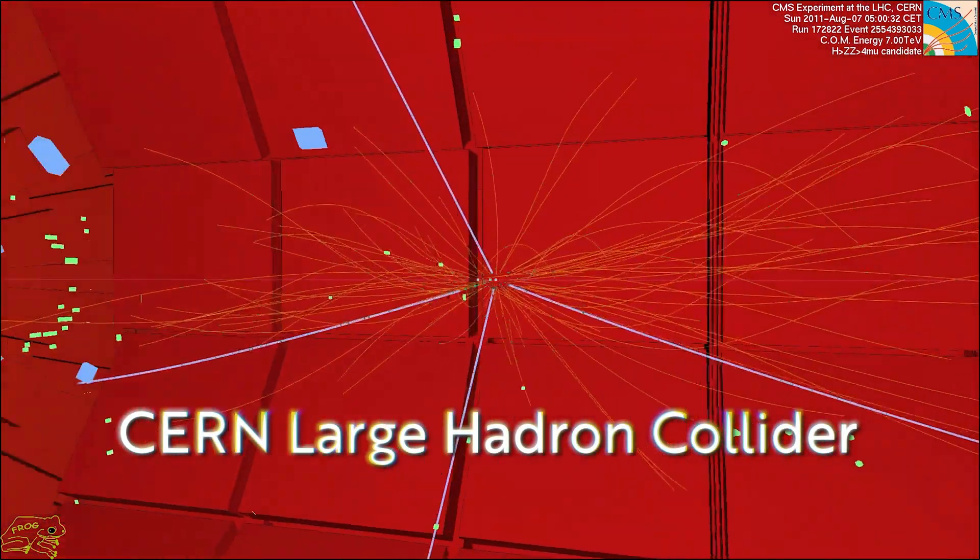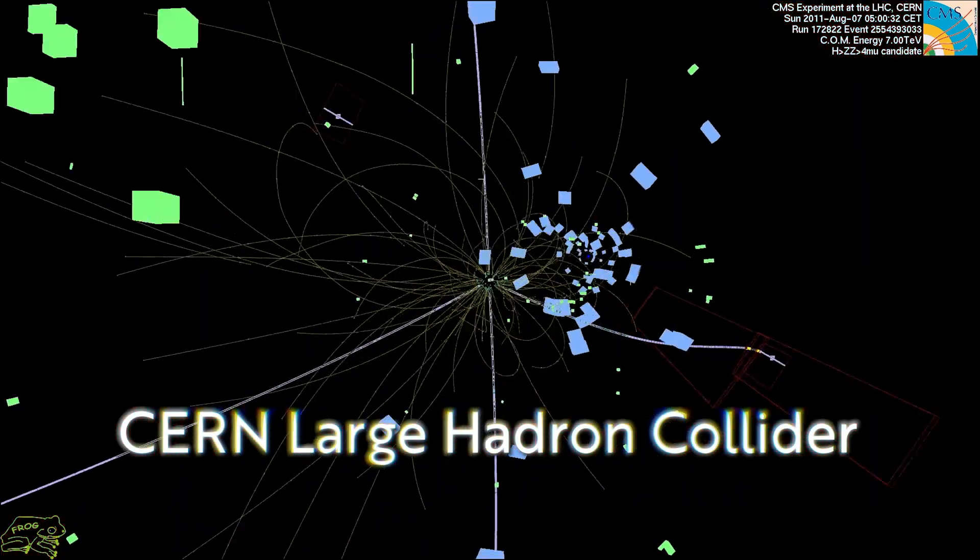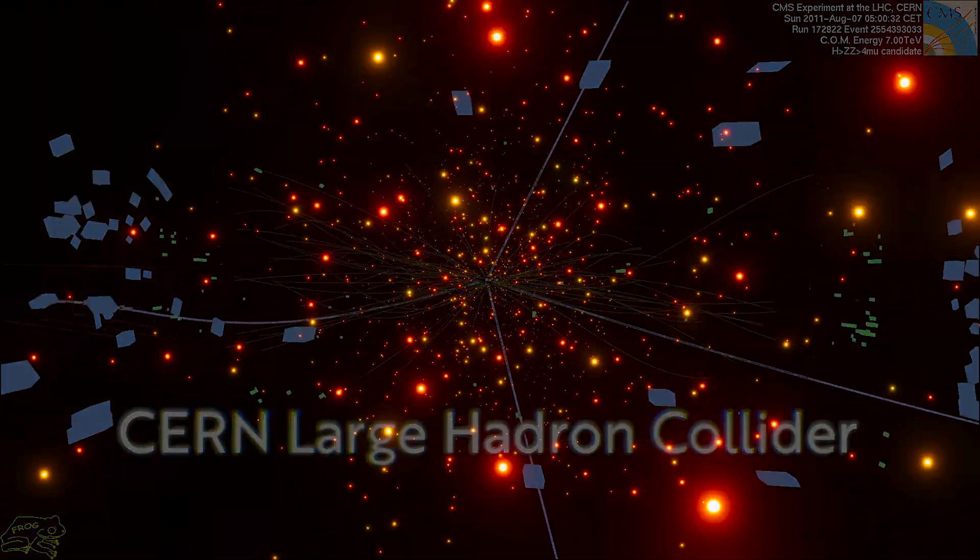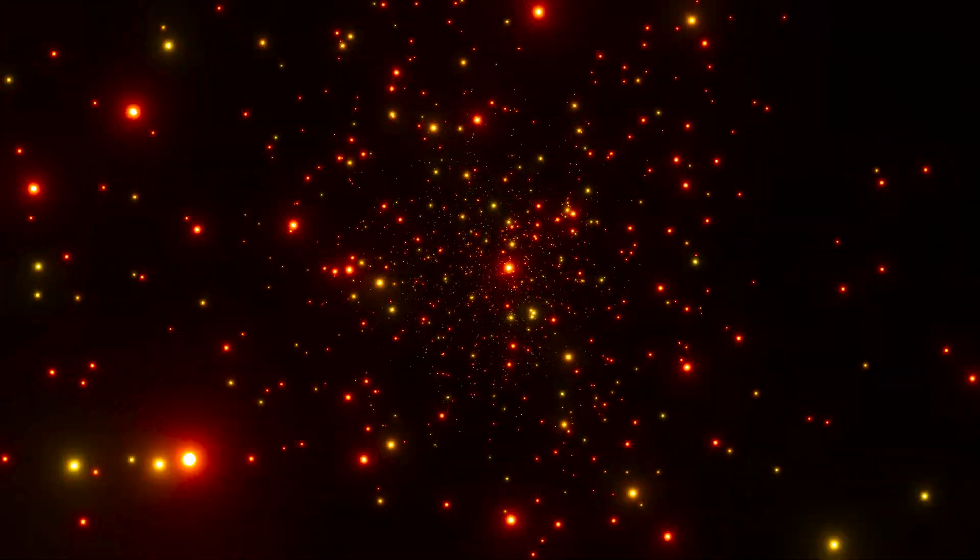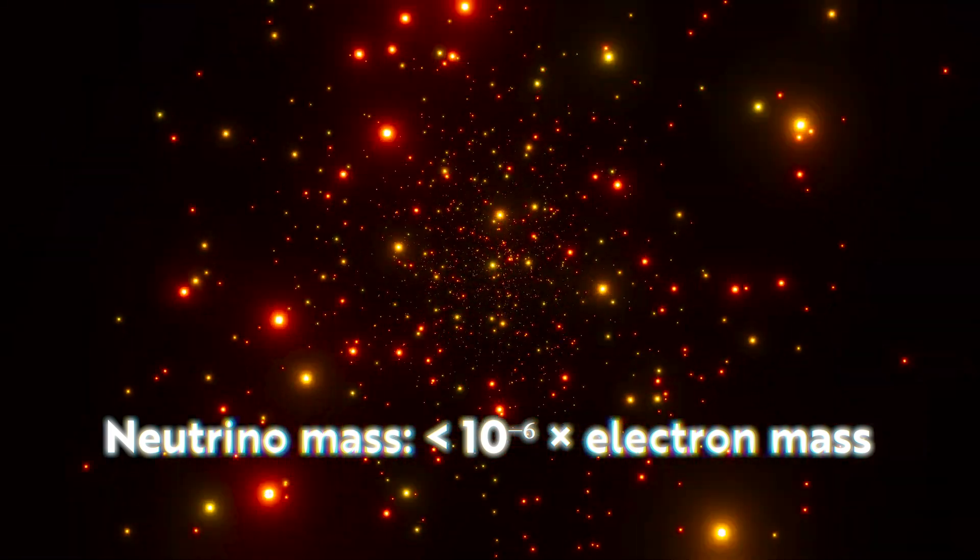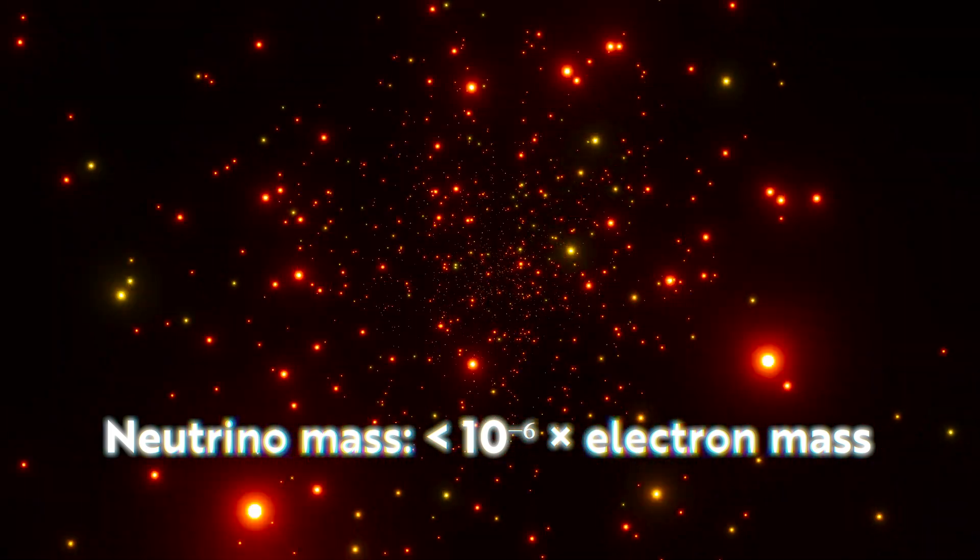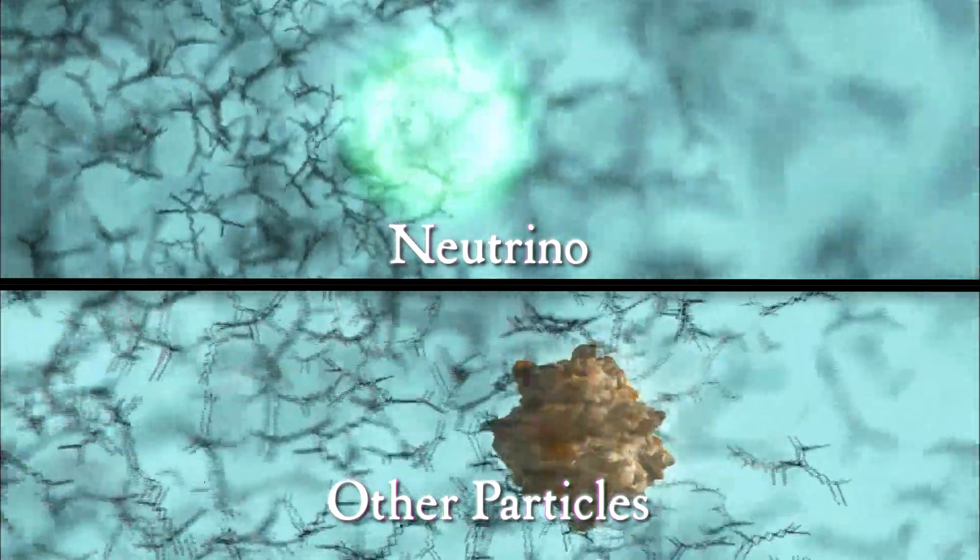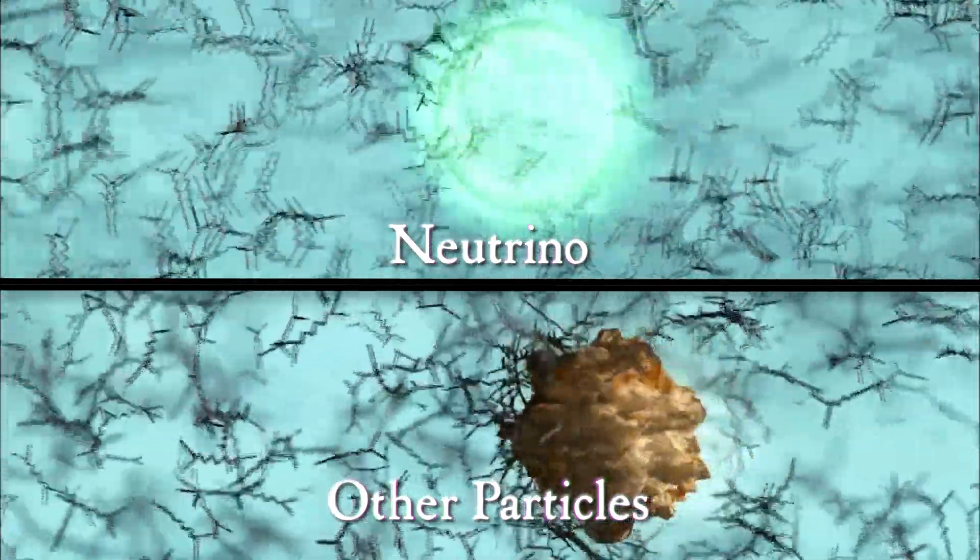But neutrinos are still just as mysterious as they were decades ago. As it comes to their interaction, the mass that they acquire is so tiny, it's less than one millionth of the mass of the next lightest particle, the electron. But if they do interact with the Higgs field, it would be at an incredibly, unprecedentedly weak reaction, since their mass is so minimal. So why don't these little vespers follow the standard rules of mass acquisition?